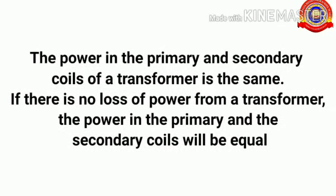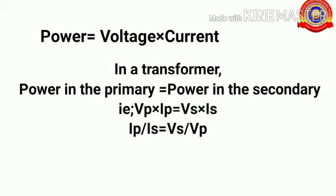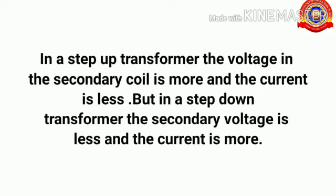The power in the primary and secondary coils of a transformer is the same. If there is no loss of power from a transformer, the power in the primary and secondary coils will be equal. Power equals voltage multiplied by current. In a transformer, power in the primary equals power in the secondary, i.e., Vp × Ip = Vs × Is, where Vp and Ip are voltage and current in the primary, and Vs and Is are voltage and current in the secondary. By rearranging this equation, we get Ip/Is = Vs/Vp. In a step-up transformer, the voltage in the secondary coil is more and the current is less. In a step-down transformer, the secondary voltage is less and the current is more.